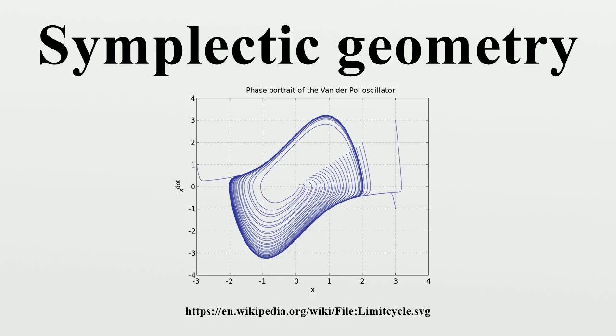Every Kähler manifold is also a symplectic manifold. Well into the 1970s, symplectic experts were unsure whether any compact non-Kähler symplectic manifolds existed, but since then many examples have been constructed.